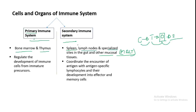The secondary immune system includes organs like spleen, lymph nodes, and MALT. These are called secondary because they are the site of the final encounter between antigen and lymphocytes — both come together here.